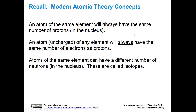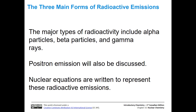One of the things we're going to be looking at in this section is radioactive isotopes. We're going to talk about three main forms of radioactive emissions, and then one more. The major types of radioactivity are alpha particles, beta particles, and gamma rays. We're also going to talk about positron emission. And we're going to write nuclear equations to represent these radioactive emissions.